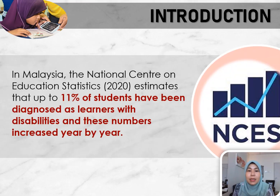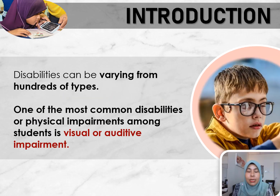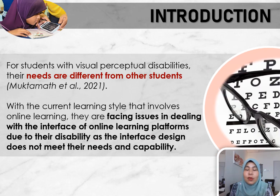In Malaysia, the National Centre on Education Statistics 2020 estimates that up to 11% of students have been diagnosed as learners with disabilities, and these numbers increase year by year. Disabilities can vary across hundreds of types. One of the most common disabilities or physical impairments among students is visual or auditory impairment. For students with visual perceptual disabilities, their needs are different from other students, as stated by Muqtama et al., 2021.